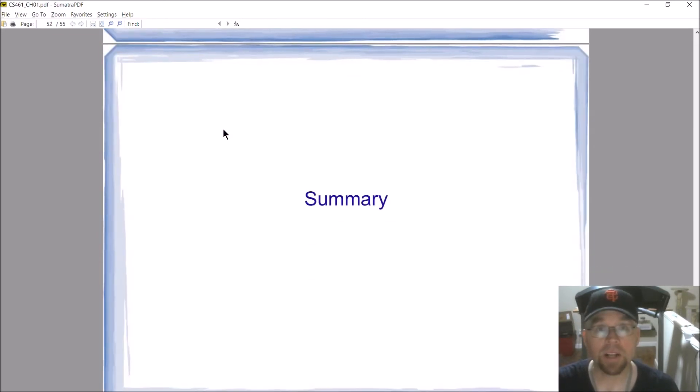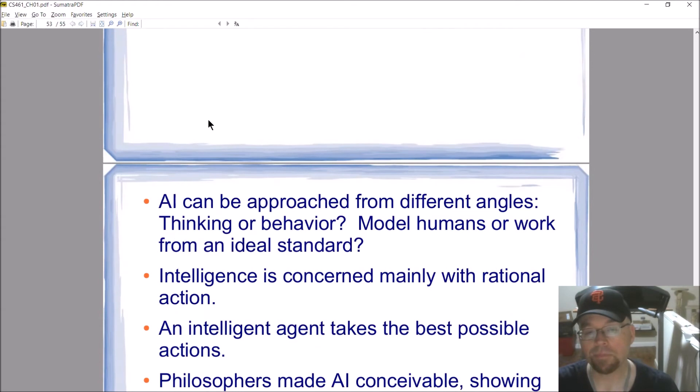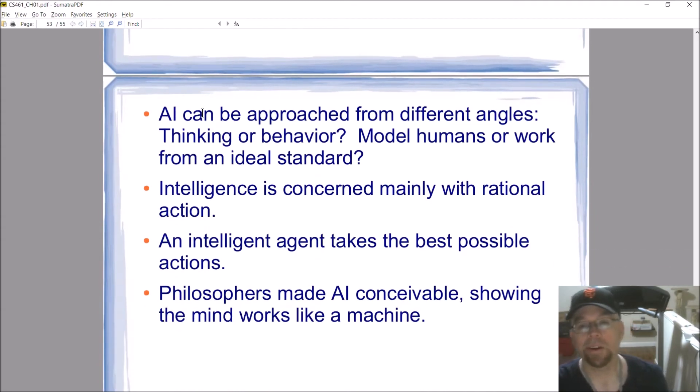Okay, so let's summarize the chapter. Alright, so AI, different angles, and this is what your first time it's going to be about, right? How are you going to think about AI or what are some definitions for AI? Are you talking about thinking?